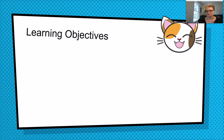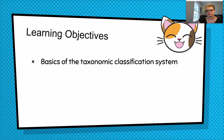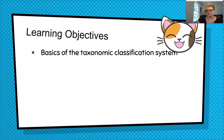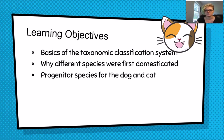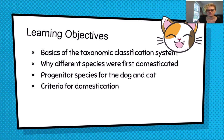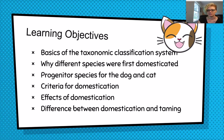Our objectives for this week are to learn the basics of the taxonomic classification system, learn why different species were first domesticated, find out the progenitor species for the dog and cat, the criteria for domestication, the effects of domestication, and the differences between domestication and taming.